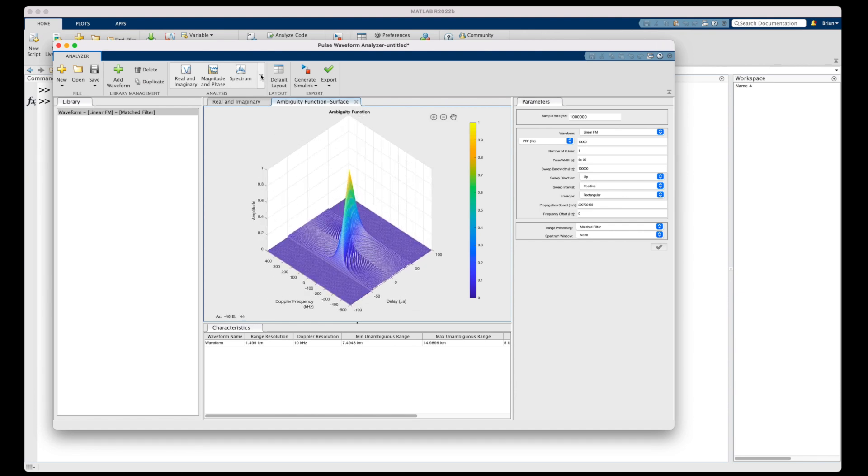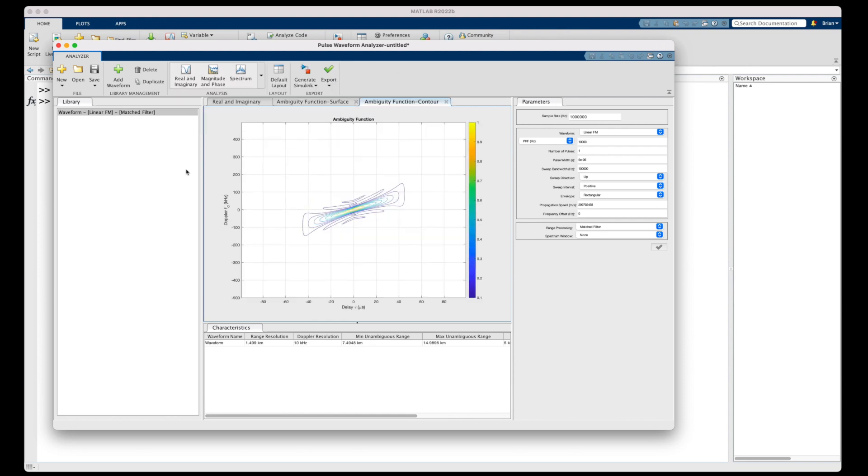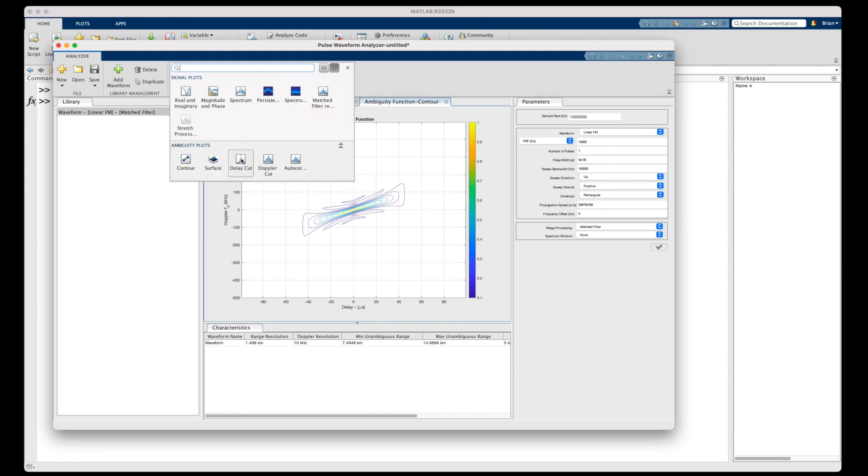Of course, an easier way to look at this might be with just a 2D contour plot. And you can see it here. And it's a lot more obvious now there's this coupling between range and Doppler. And finally, if you're interested in just a slice of this function, either across Doppler or across delay, then we can look at any one of those cuts as well.